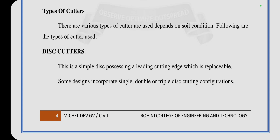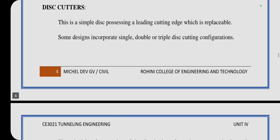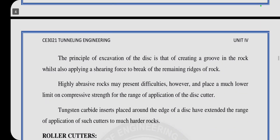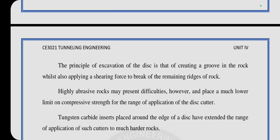Types of cutters — disc cutter: this is a simple disc with a rotating cutting edge which is replaceable. Some designs incorporate single-level or triple-disc cutting configurations. The principle of excavation with a disc cutter involves creating a groove in the rock wall and applying a shearing force to break the remaining ridges of rock. Highly abrasive rocks may pose difficulties and reduce the service life, but disc cutters remain suitable across a range of applications.